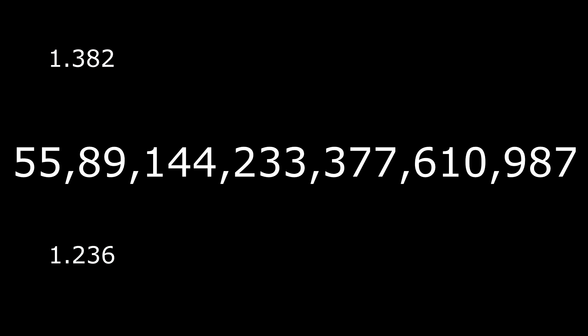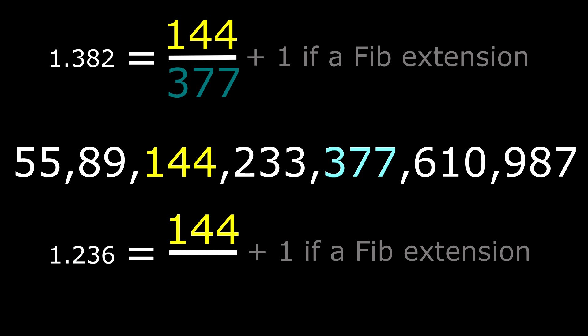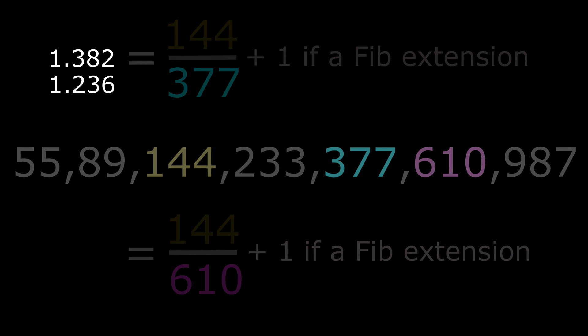These subdivisions shown in the second image are 0.382, which is a number in the sequence divided against the number two places to the right, and 0.236, which is a number divided against the number three places to the right.